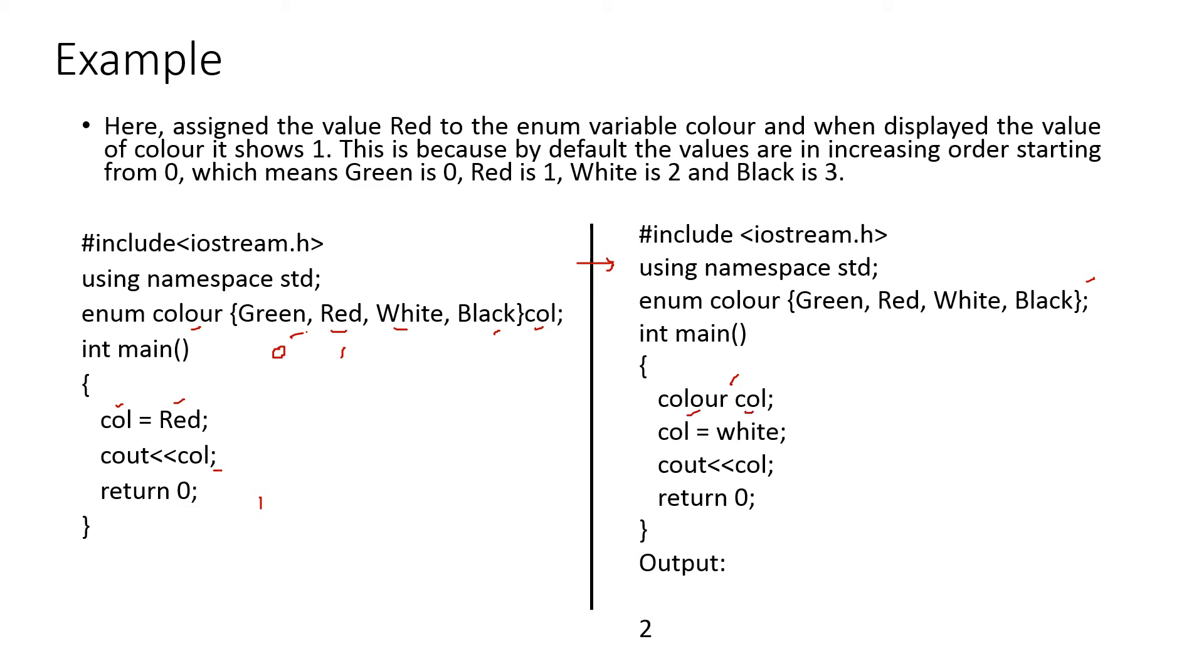col is equal to white. Here, white is in the position two. So, the output will be two. This is how enum can be used.